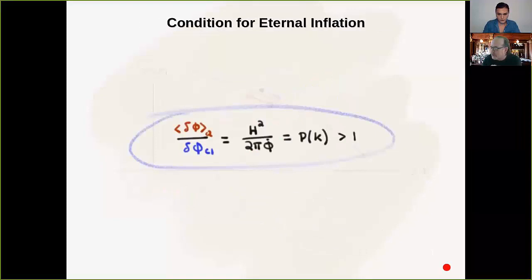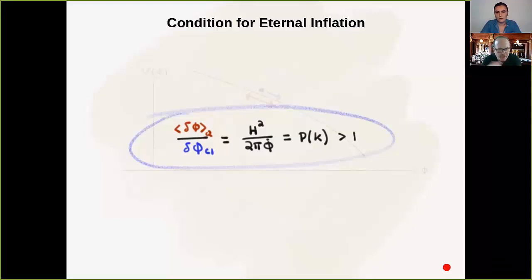So our condition for eternal inflation is that δφ_quantum/δφ_classical equals the curvature power spectrum and has to be greater than unity. This is a quick-and-dirty estimate for whether you're in the eternal inflation regime. A more quantitative approach is to write down a Fokker-Planck equation and solve for the stochastic evolution. I'll talk about more recent work where people have actually done that for the cases we're going to discuss.